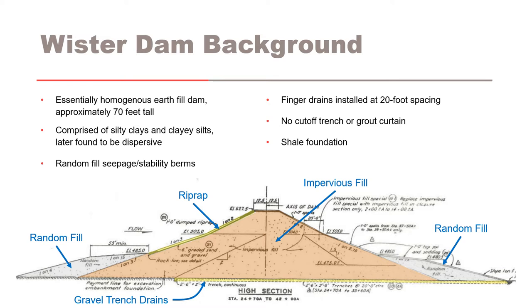It has random fill, seepage, and stability berms upstream and downstream. The random fill berms were comprised primarily of shale and sandstone from the required excavations. Finger drains were constructed over the downstream two-thirds of the embankment foundation to allow for consolidation of the embankment and overburdened foundation soils during and after construction. The embankment was built on a shale foundation with no cutoff trench and without grouting.